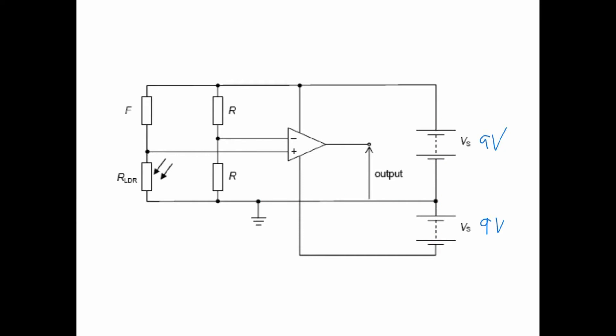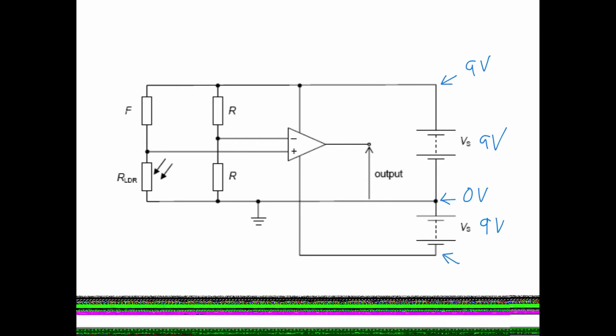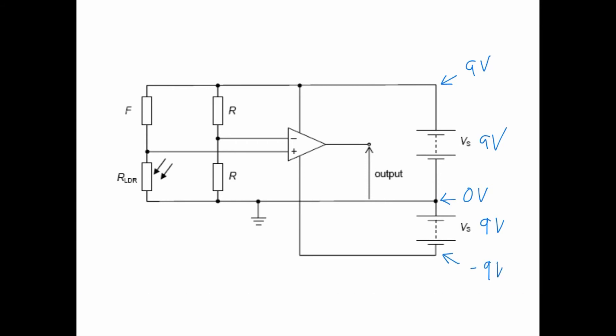And then the technique is to earth the center. That means in between these two cells, which is here, you earth it. So if you earth it, what is the potential here? Zero volts. Therefore, what's the potential here? Nine. So therefore, what's the potential here? Negative 9. Do you agree?